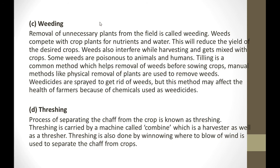Next is weeding. Weeding is the removal of unnecessary or undesirable plants from the field. Weeds compete with crop plants for nutrients and water, which reduces the yield of the desired crop. Weeds also interfere while harvesting and get mixed with the crop. Some weeds are poisonous to animals or humans. Tilling is a common method to remove weeds manually by hand. Weedicides are chemicals sprayed to kill weeds, but chemical methods can affect farmer health.